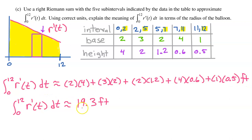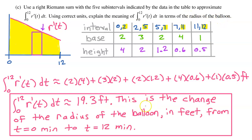Whenever you see the integral of a derivative, think about the first fundamental theorem of calculus. The integral from 0 to 12 of r prime of t dt equals r(12) minus r(0) — the net change in the radius from 0 to 12 minutes. The units should be in feet. This Riemann sum is approximating the net change in the radius of the balloon from t equals 0 to t equals 12 minutes. Make sure to include units in your justification.